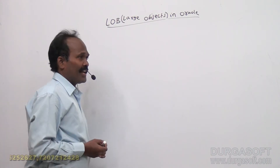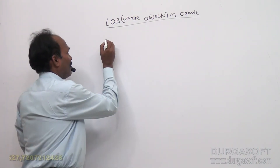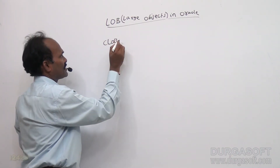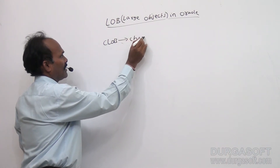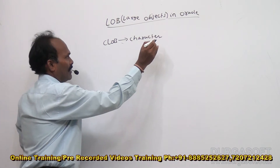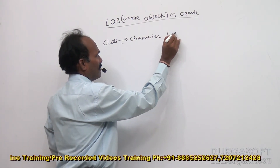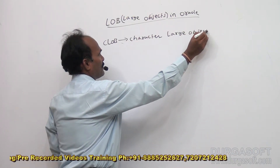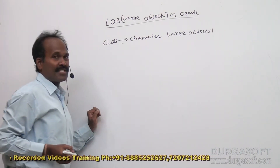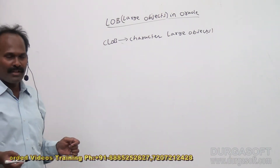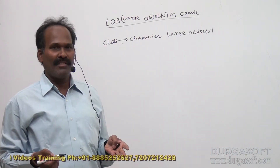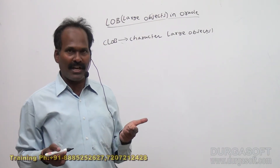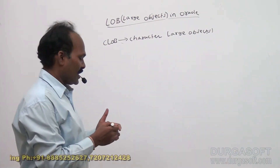Under the large objects category, we are going to have CLOB, which stands for Character Large Objects. The purpose of character large objects is to store structured information in a database. Structured information means, for example, a text file that has some structure. To store that kind of structured text, we can make use of CLOB.